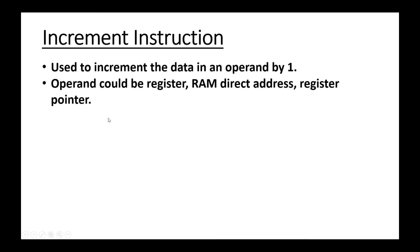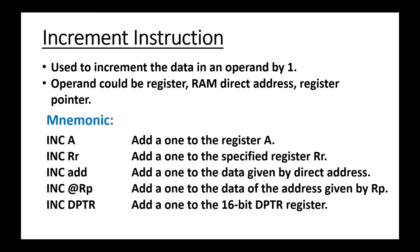Increment and decrement instructions in 8051 are used to increment or decrement the content of any register, address, or indirect address. First we will start with the increment instruction. It is used to increment the data in the operand by one. That operand could be a register, RAM direct address, or register pointer or indirect address.